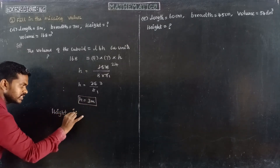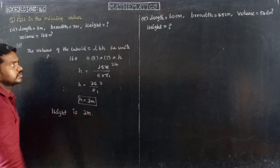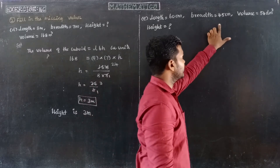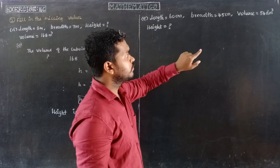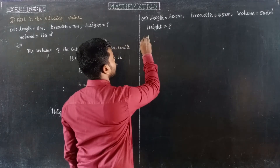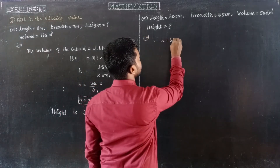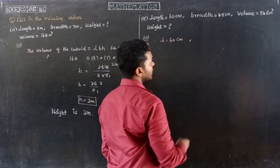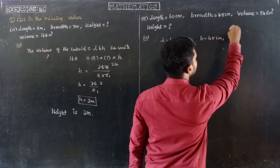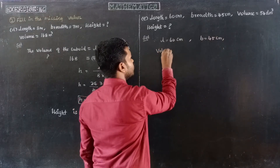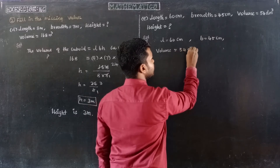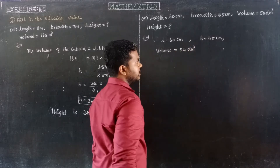Height is 3 meters. Next is subdivision E: length 60 centimeters, breadth 45 centimeters, and the volume is 54 decimetres cube. The units for length are centimeters and breadth are centimeters, but the volume is given in decimetres cube.